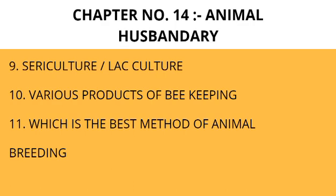Then: which is the best method of animal breeding? Topics covered include in-breeding, out-breeding, out-crossing, cross-breeding, and inter-specific hybridization. You should be able to tell which is the best method and give reasons.